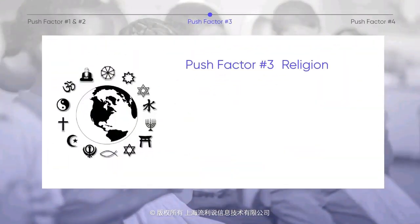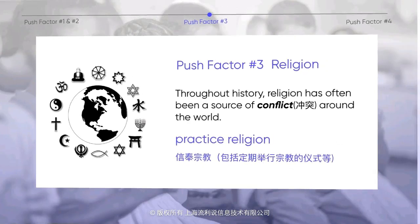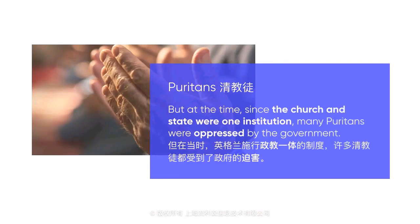Another common reason for migration is religion. Throughout history, religion has often been a source of conflict around the world. In some cases, people have been killed or jailed because of their religious beliefs, and many have migrated to practice their religion safely. For example, some of the first European settlers in America were escaping religious conflict. This group, known as the Puritans, opposed England's national church. At the time, since the church and state were one institution, many Puritans were oppressed by the government, so they fled to America to find religious freedom.